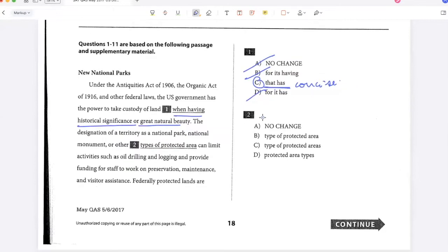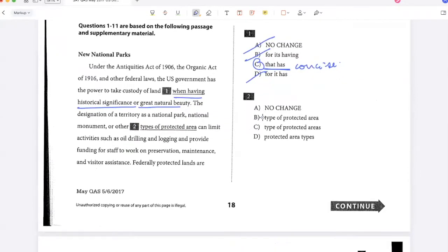The designation of a territory as a national park, national monument, or other types of protected area can limit activities such as oil drilling and logging and provide funding for staff to work on preservation, maintenance, and visitor assistance. Here I have to follow parallel structure. I'm talking about the designation of a territory as a national park, that's a singular noun, national monument, again, a singular noun, or other type of protected area. I have to continue with singular to maintain parallel structure. So B should be my right answer.